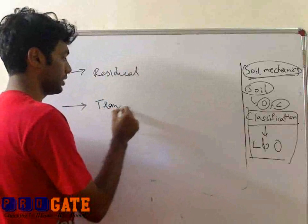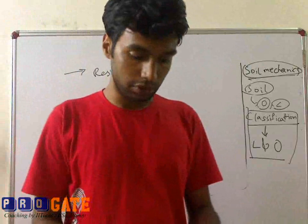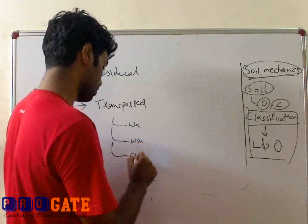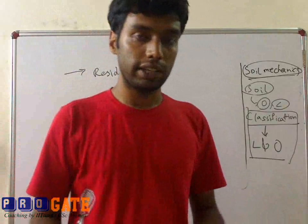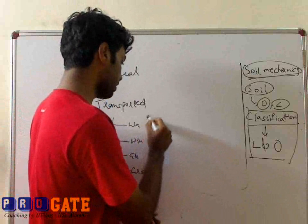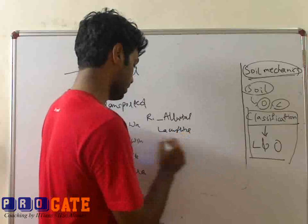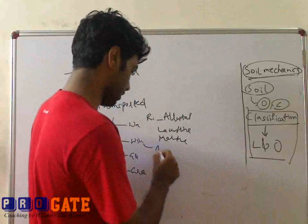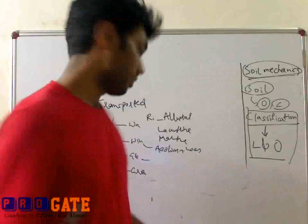There are two types of soils based on the agencies of transport. Transported soil based on the agencies of transport can be further divided into four types: water transported soil, wind transported soils, glacier transported soils, and gravity transported soils. Water transported soils can be from a lake, river, or sea. If transported by a river, it is called alluvial soil; if by a lake, it is called lacustrine; and if by the sea, it is called marine. When it comes to wind, they are also known as aeolian soils, and the best example is loess.